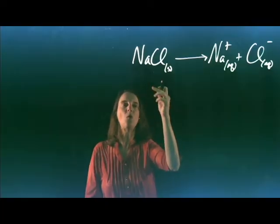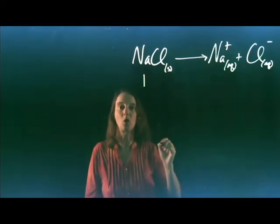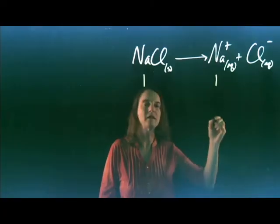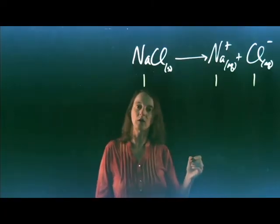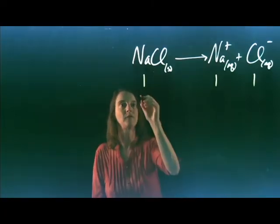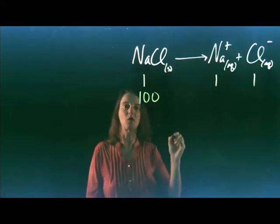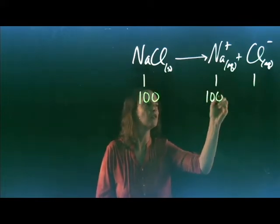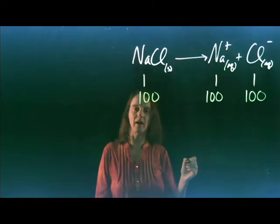If we have one sodium chloride unit, we would generate one sodium ion and one chloride ion. If we had a hundred sodium chloride units, we would generate a hundred sodium ions and a hundred chloride ions.